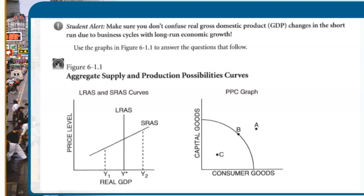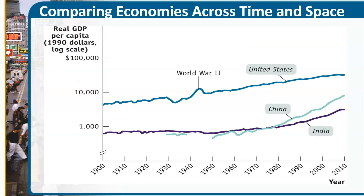We're growing the production possibilities that our economy has. Economies typically, we hope, are growing, and over time they will continue to grow. Some grow faster than others — some have a higher growth rate, and we'll talk about that. We really want to look at real GDP per capita in terms of making this happen. Why per capita? Because it's per person. You can look at an economy and think it's growing exponentially, but when you divide it by the number of people in the country, the standard of living may not be as high as we'd like to see.